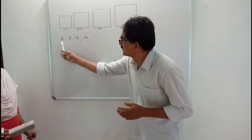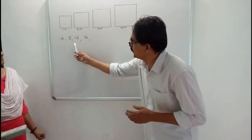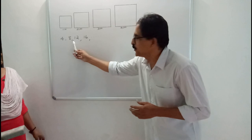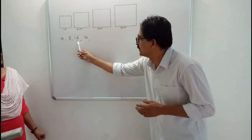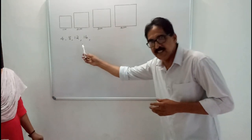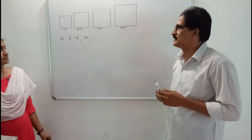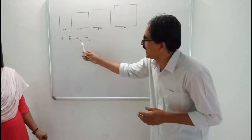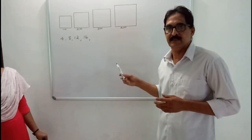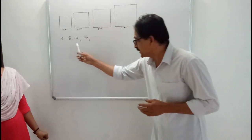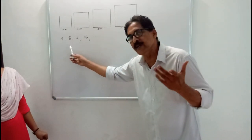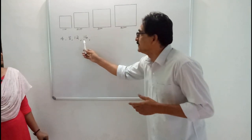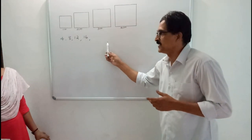Here, the sequence is formed by adding 4 successively. 4 plus 4 is equal to 8cm. 8 plus 4 is equal to 12cm. 12 plus 4 is equal to 16cm. It goes on like this. That is, a sequence obtained by starting from any number and adding a fixed number repeatedly is called an arithmetic sequence.